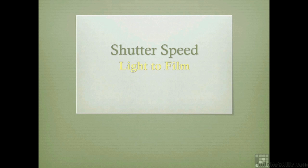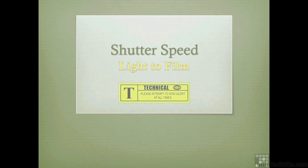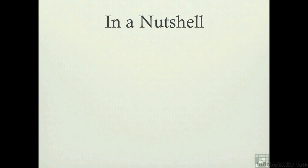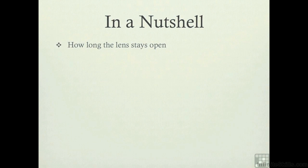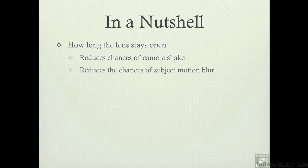The last thing I want to examine in this chapter about equipment is shutter speed — that's the light to the film. So what is shutter speed? It's how long the lens stays open. With the right shutter speed, if it's faster, it can reduce the chances of camera shake and reduce the chances of subject motion blur, assuming you're using a fast shutter speed.